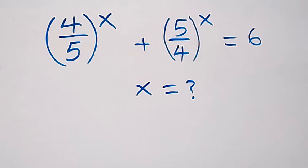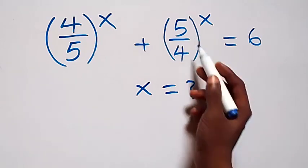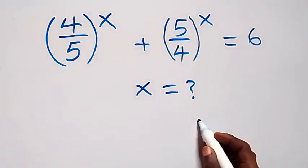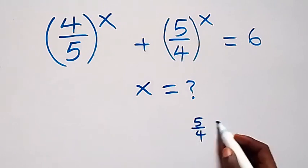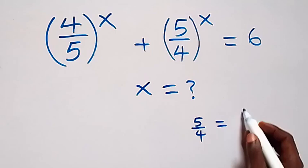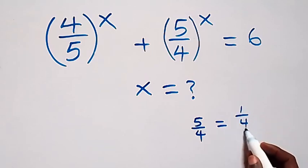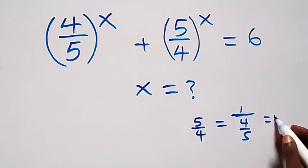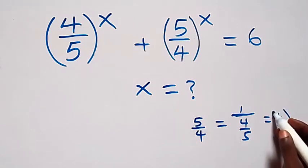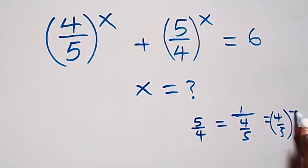From what we have here, we can write 5 over 4 as equals to 1 over 4 over 5. That is, when we take the reciprocal here, which also can be written as 4 over 5 raised to power minus 1.